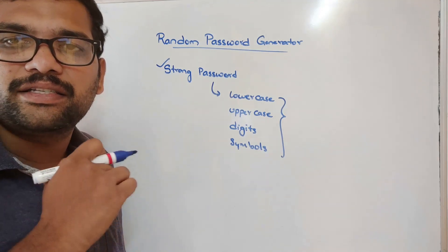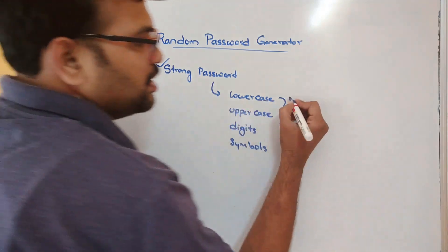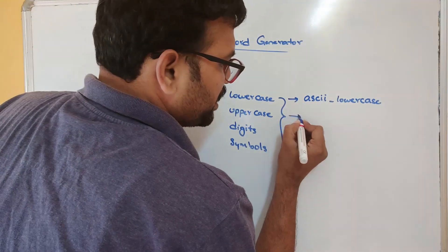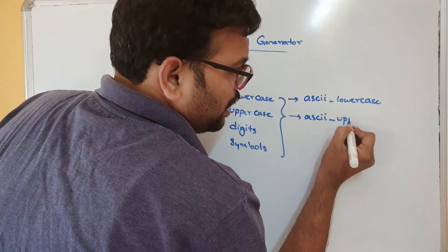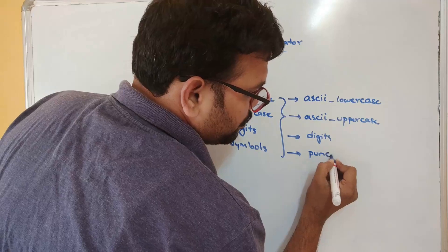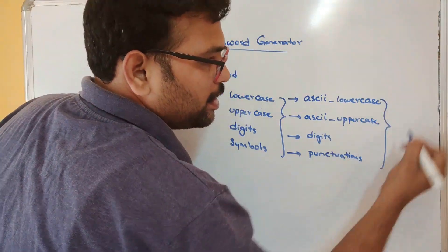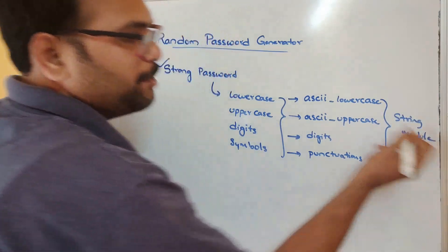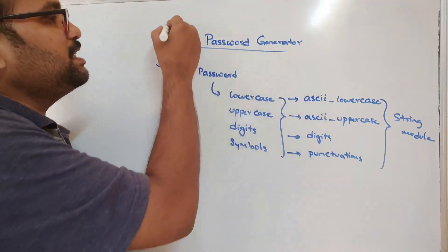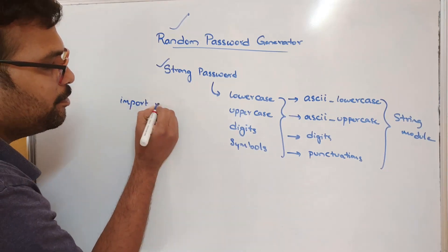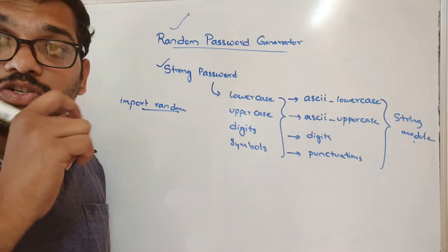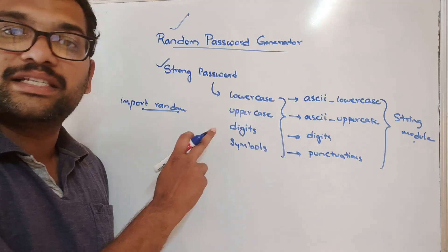To build this, we'll use pre-initialized string constants from the string module. For lowercase characters it's `ascii_lowercase`, for uppercase it's `ascii_uppercase`, for digits it's `digits`, and for symbols it's `punctuation`. Using these string constants along with the `random` module, we can generate a random strong password that is a combination of all four categories.